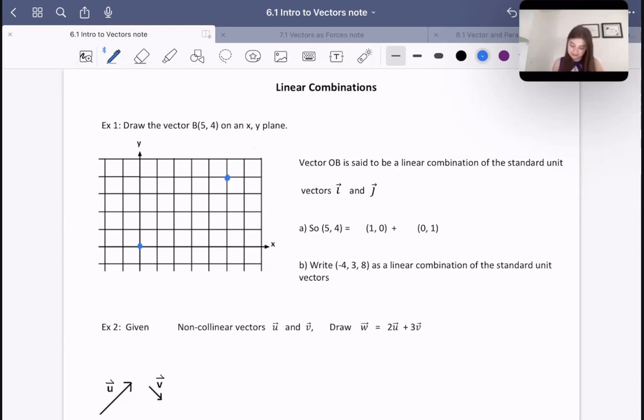So now what they're wondering is, well, 5, 4 is how many to the right? How many of these x values? Well, it's going to be 5, right? And how many of these 0, 1? Well, 4 of them, right? So this is another way to write down 5, 4 is saying, well, it's 5 units to the right plus 4 units up is the same thing, right?